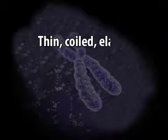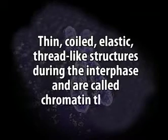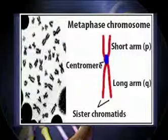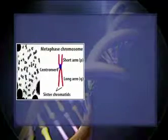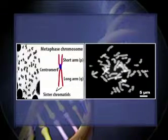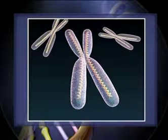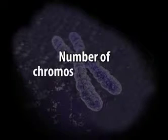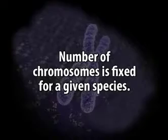Eukaryotic chromosomes are thin, coiled, elastic, thread-like structures during interphase and are called chromatin threads. The morphology of the chromosome is best studied during metaphase and anaphase, which are the periods of maximal contraction. During these phases, the chromatin threads become highly coiled and folded to form compact and individually distinct ribbon-shaped chromosomes. The number of chromosomes is fixed for each species, varying from a minimum of two to several hundred in different species of plants and animals.